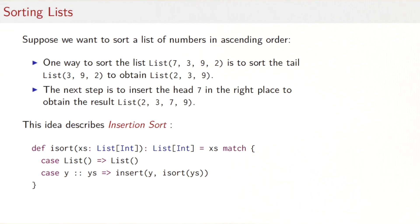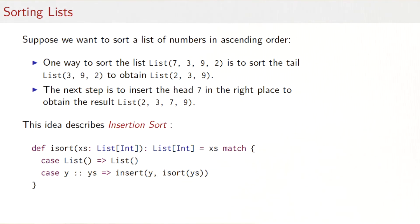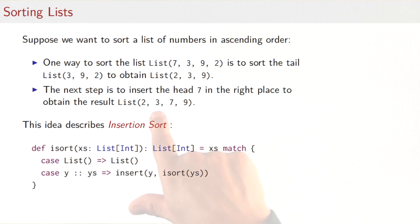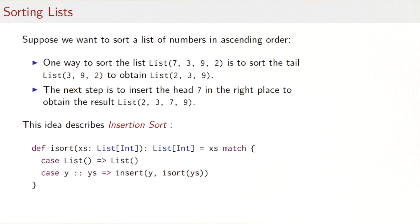As another example, let's sort a list of numbers in ascending order using insertion sort. The standard List class has a sort function, but let's pretend it doesn't. One way to sort a list like [7, 3, 9, 2] is to sort the tail [3, 9, 2] to get [2, 3, 9], then insert the head 7 at the right position — meaning all preceding elements are smaller or equal and all following are larger or equal. This is insertion sort.